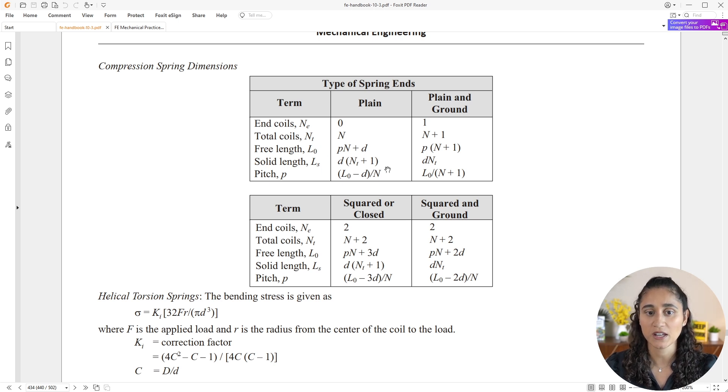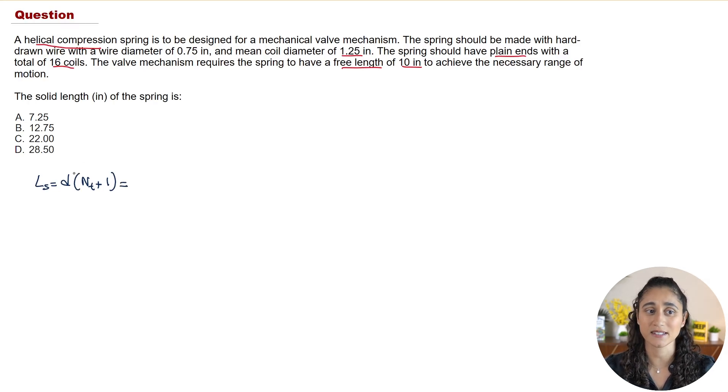And we want to determine the solid length, so Ls is going to be equal to this. Let's go ahead and write the equation down. Now let's go ahead and plug in the numbers. So here d, that's the wire diameter. Notice we were given two diameters - this diameter here we're not going to use. And this is common on the FE exam where they would give you extra variables that you don't really need to use to solve for the problem, and they do that just to throw you off. And this is why it's very important that you guys understand these equations, understand the concepts. And that's what we actually do in our courses and that's why our students pass the exam faster.